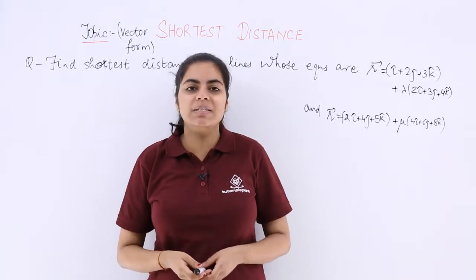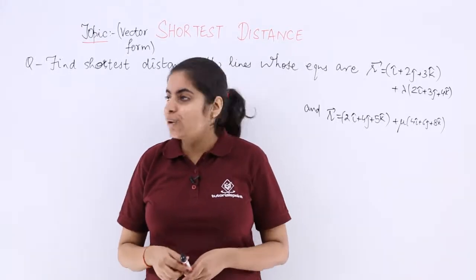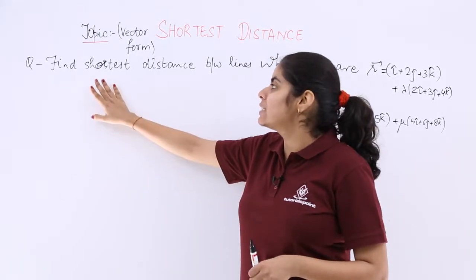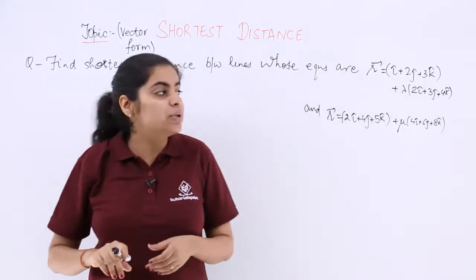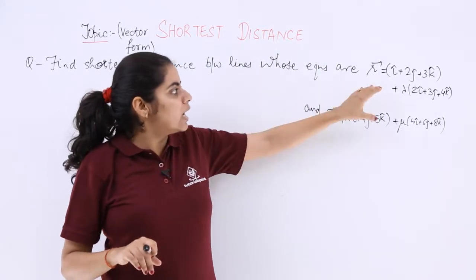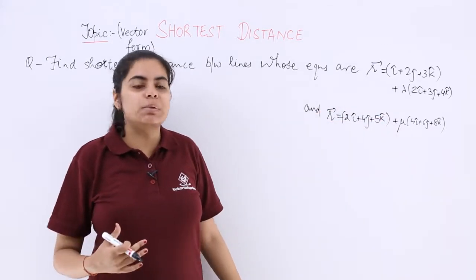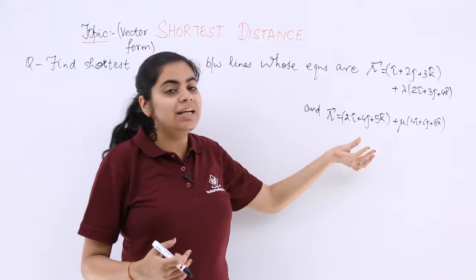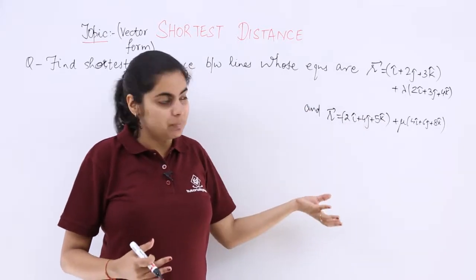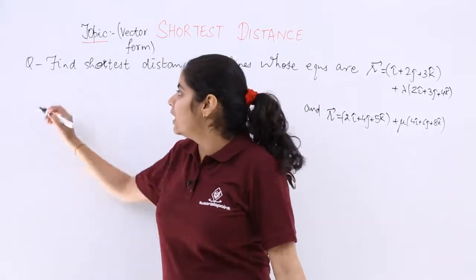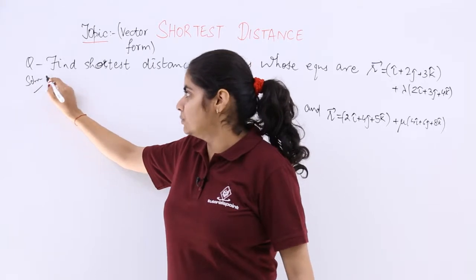This is a question asked in the CVSE previous year examination from 2008. It says find shortest distance between the lines whose equations are given. The first equation is this, the second equation is this. This is a very direct question based on the formula. So without waiting much, let's write the formula and start the solution.